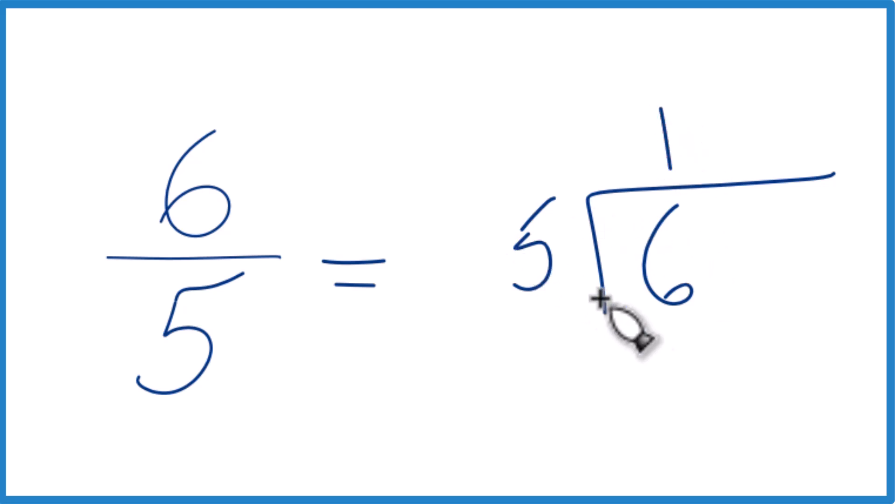5 goes into 6 one time, so then 1 times 5 gives us 5. We subtract, we get 1.